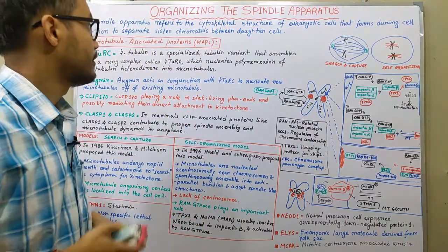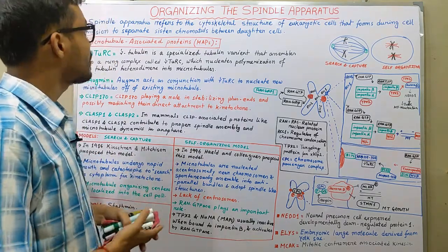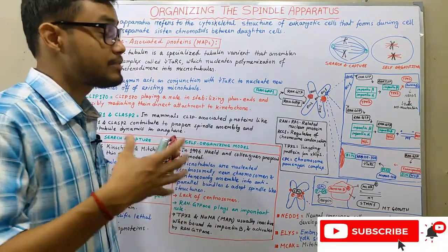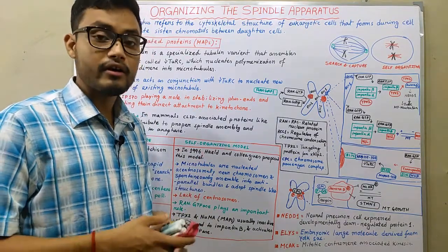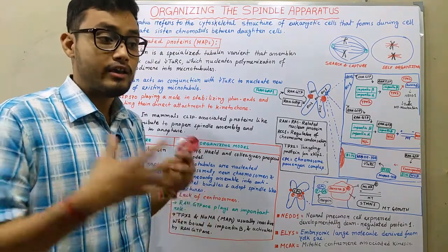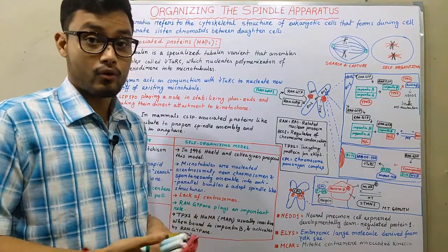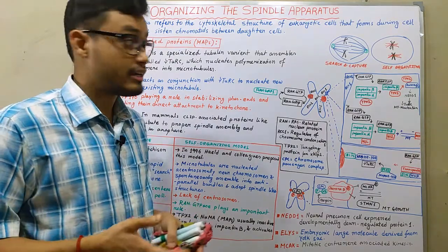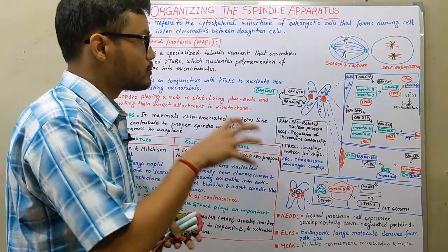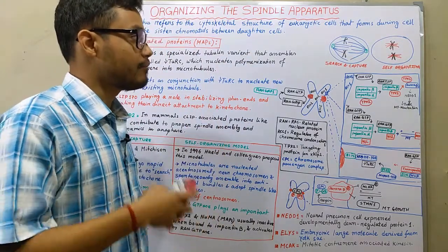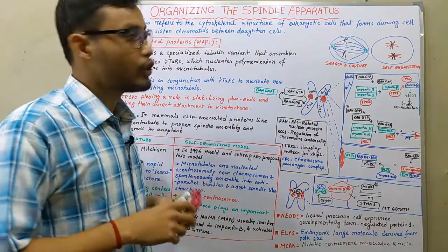Spindle apparatus refers to the cytoskeleton structure of eukaryotic cells that forms during the division to separate sister chromatids between two daughter cells. A spindle apparatus is formed with the help of microtubules and kinetochore. In my previous video I already discussed about the kinetochore molecular structure in which all the necessary proteins essential for the making of kinetochores are briefly described. The kinetochore and microtubules form together and make a functional spindle apparatus that helps to segregate those particular chromosomes into two daughter cells.